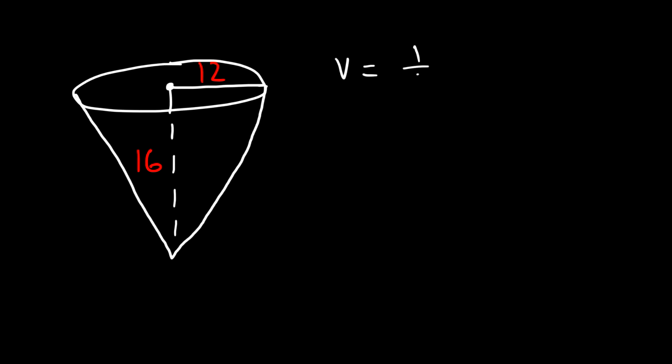The volume of a cone is 1/3 π r² times the height. So the radius we said is 12 inches and the height is 16 inches.